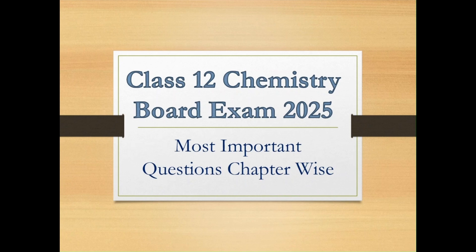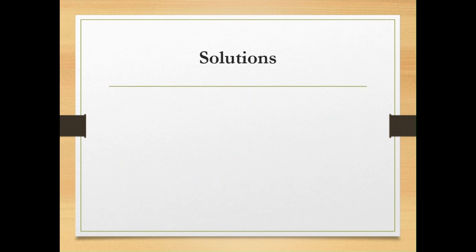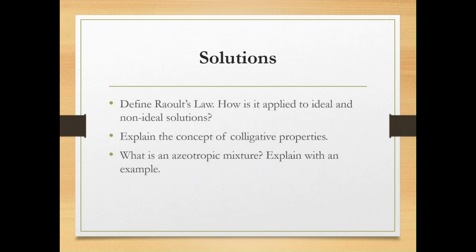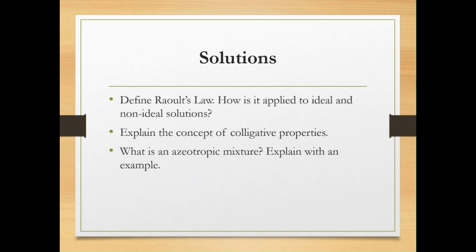As you can see, chapter-wise for chapter number one, Solutions: define Raoult's law and how it is applied to a non-ideal solution, explain the concept of colligative properties, what is an azeotropic mixture — explain with an example.